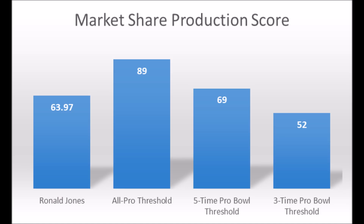Based on my data since the 1969 NFL Draft Class, he doesn't really hit the all-pro threshold. The majority of all-pro running backs since 1969 had at least an 89 or higher score.